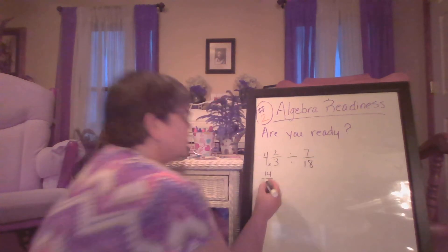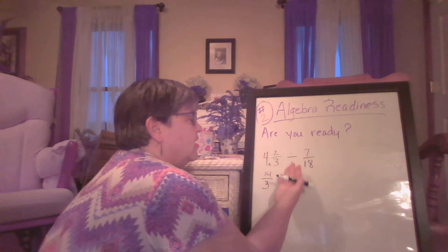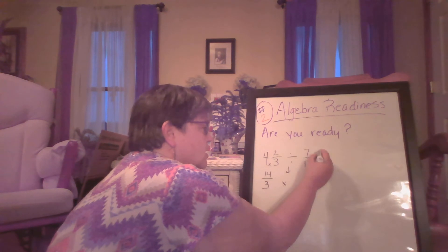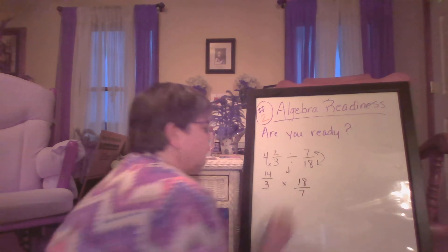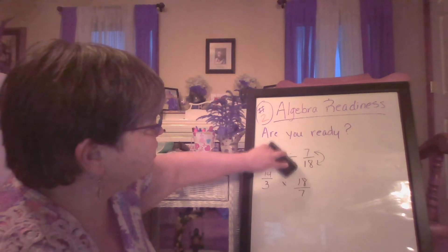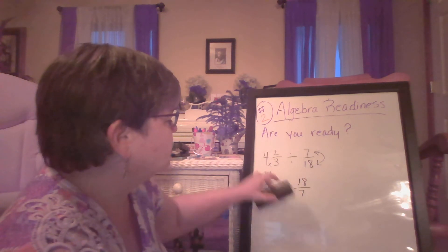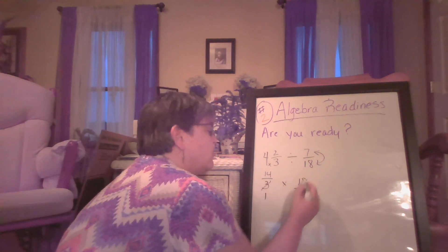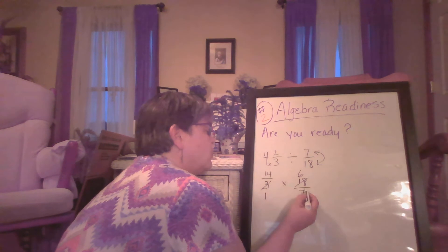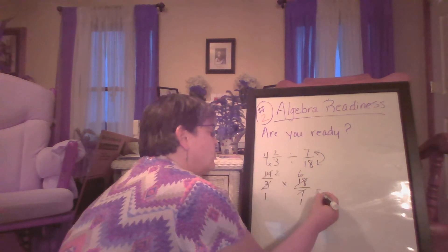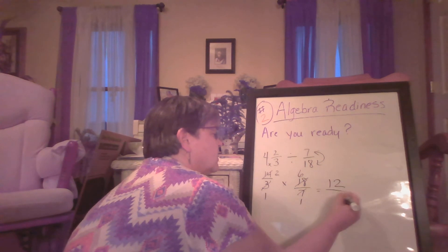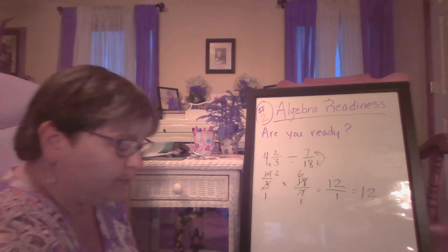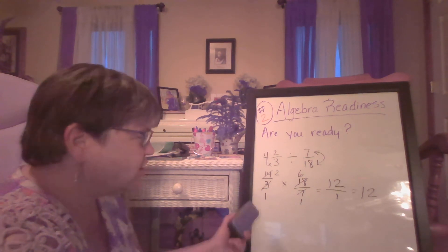So we have 14/3, and now I need to divide that by 7/18. I'm going to change division to multiplication and flip my other fraction. Then I'm going to look and see if there's anything I can reduce. I can cross-reduce: three will go into three once, and three will go into 18 six times; seven will go into seven once and into 14 twice. So when I multiply across, I get the answer 12.